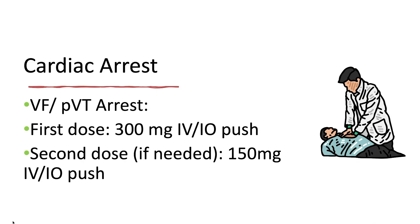In cardiac arrest, the first dose of amiodarone is 300 mg IV or IO push, followed by a D5 water flush. The second dose, if needed, is 150 mg IV or IO.